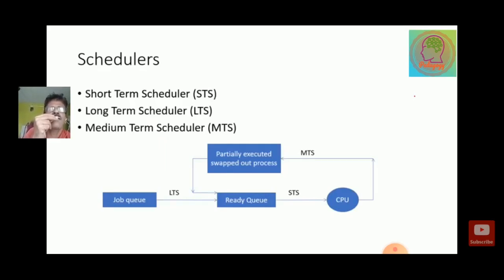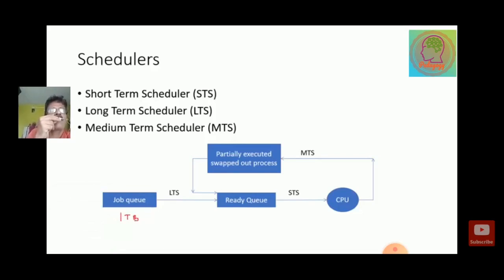First look at the diagram. There is a job queue. From the job queue the process goes into the ready queue — the scheduler responsible for this is known as the long term scheduler. From ready queue to CPU it is the short term scheduler. The medium term scheduler handles processes which have partially executed — that means a process must be swapped out or swapped in from the CPU. For example, your job queue is like your hard disk of 1TB, and the ready queue is like your RAM.